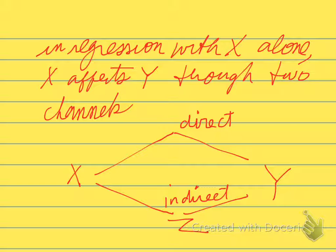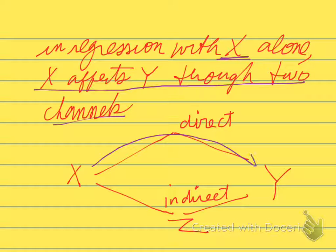In a regression with x alone, x affects y through two channels. The first channel is the direct effect of x on y, and the second channel is through this omitted variable z. That is, x is correlated with z, and z affects y, so that's the indirect effect.